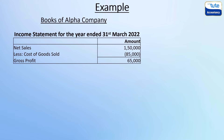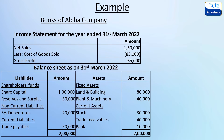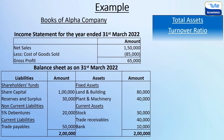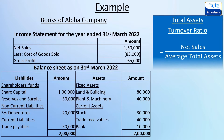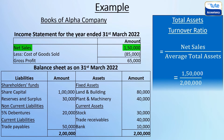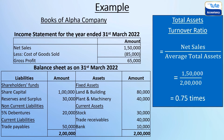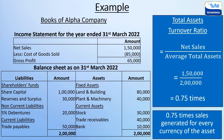Let's take an example. Using an extract of the income statement and balance sheet of Alpha Company as on 31st March 2022, we calculate the total assets turnover ratio. The formula is net sales divided by total assets. Here, net sales are 1,50,000 and total assets are 2,00,000, giving us a total assets turnover ratio of 0.75 times. This means 0.75 of sales are generated by every unit of currency of asset invested in the business.